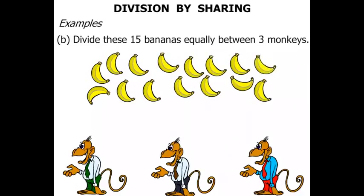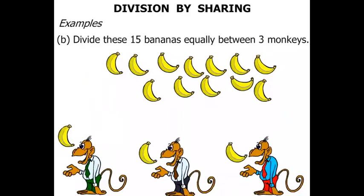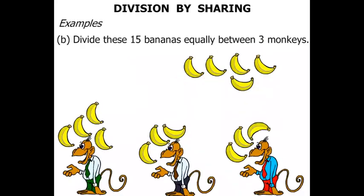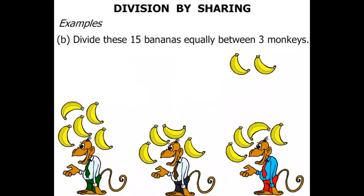And one more makes 15 bananas. Again we just keep on moving the bananas around — take it in turns to give each monkey a banana and then move on. And we've just about done, and once we've finished let's see what we've got.